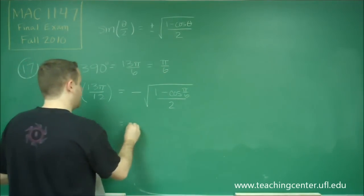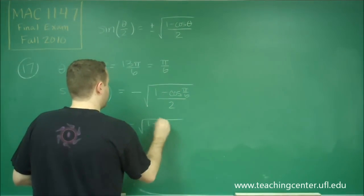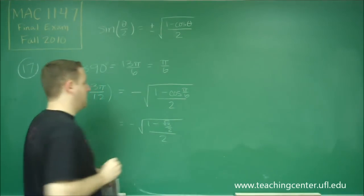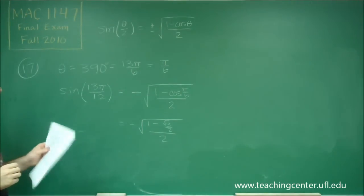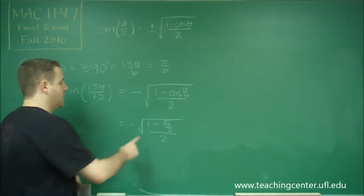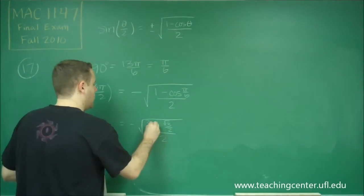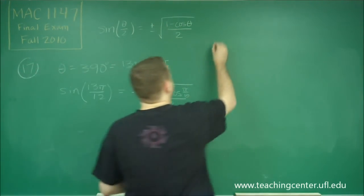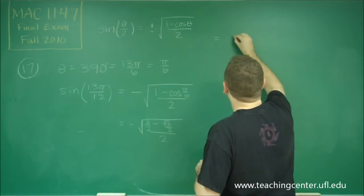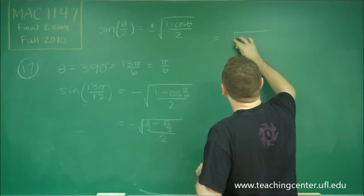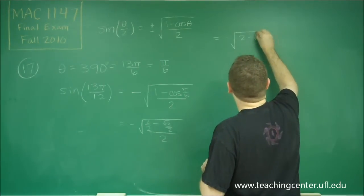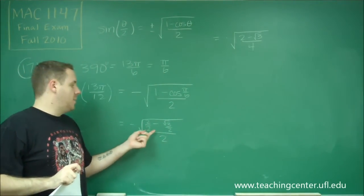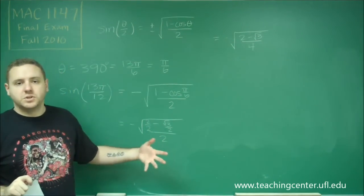So let's see how that simplifies. We get negative — here we have 1 minus cosine of pi over 6, which is root 3 over 2, all divided by 2. We can get a common denominator and simplify this sum — change the 1 to be 2 over 2. So these combine to have a denominator of 2, but then you're dividing by another 2, so your denominator becomes 4.